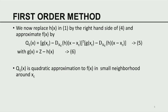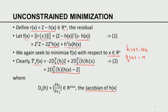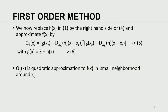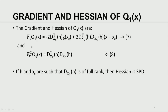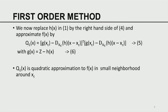Going back to our previous expression, F of X contains H of X. We are going to replace H of X in equation 1 by the right hand side of the first order Taylor expansion — simply a linear approximation to H of X. Doing so, we get a function Q1 of X, which is an approximation to F of X in a small neighborhood around Xc. F of X is the global function; Q1 of X is a local approximation to the global function.